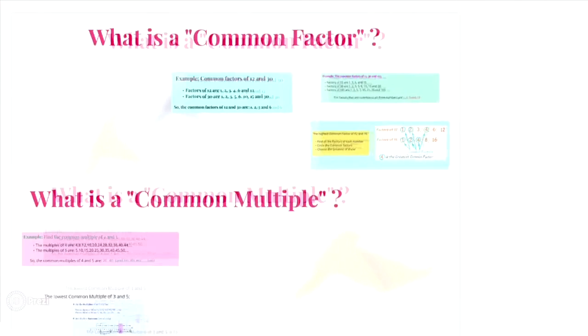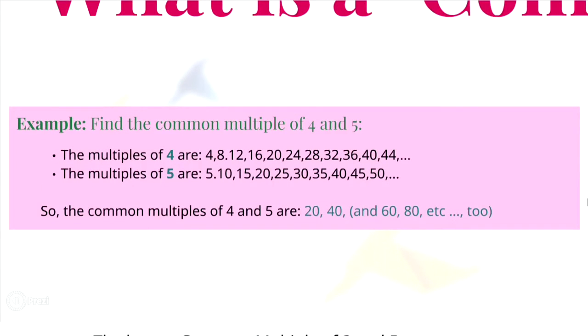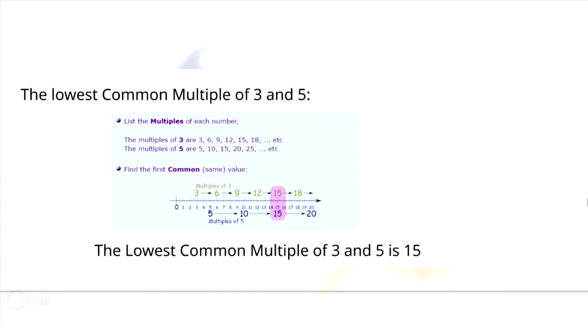Next we talk about the common multiple. Multiples that are common to all given numbers are called common multiples. The LCM of numbers is the lowest of all common multiples. For example, to find the common multiples of 4 and 5, first find the multiples of 4, then find the multiples of 5. The common multiples of 4 and 5 are 20, 40, 60, and others. In the next exercise you must find the lowest common multiple of 3 and 5. List the multiples of each number, find the common multiples, and you can say that 15 is the LCM of 5 and 3.